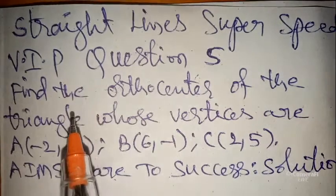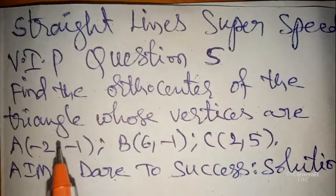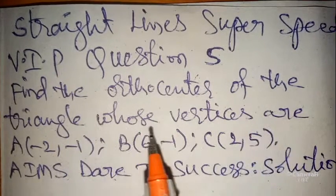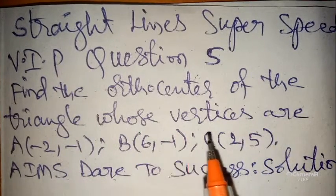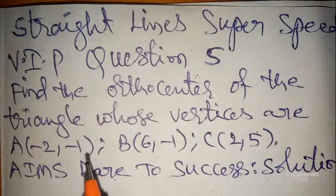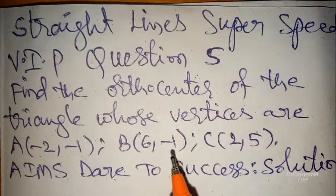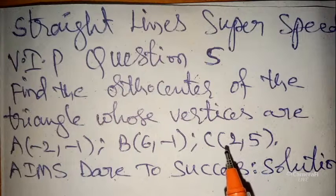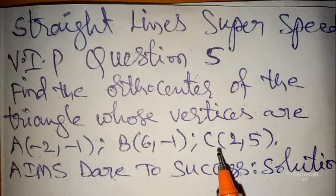From the straight lines chapter, today our question is: find the orthocenter of the triangle whose vertices are (-2, -1), (6, -1), and (2, 5). According to this question, now I am straight to success solution.